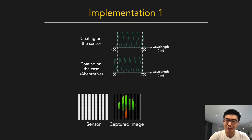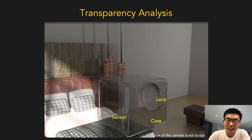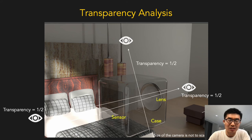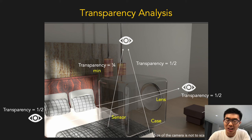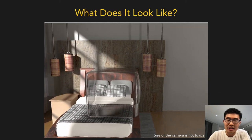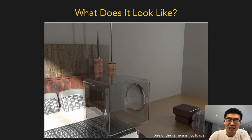This is the captured image. This is the transparency analysis. Half light passes through, then half of that, resulting in one-fourth light. The transparency achieves this minimum value when the eye sees through the case and the sensor at the same time. This is what the water transfer camera looks like. Please see our technical report for more details. Thank you.